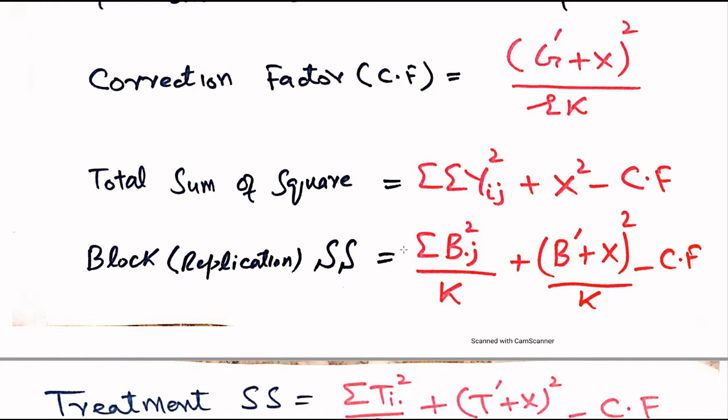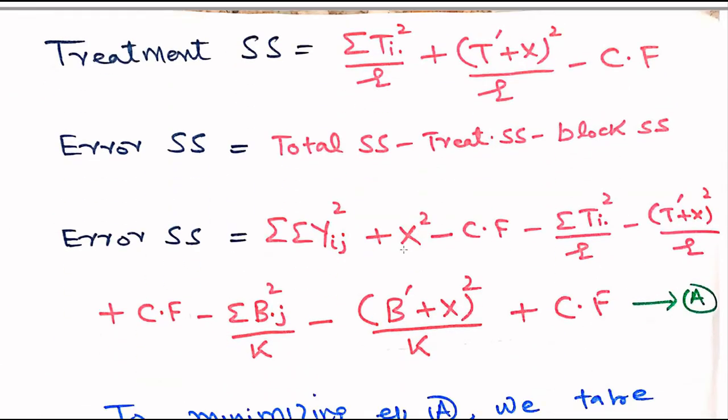For block or replication sum of squares, its abbreviation is SS. So it equals the sum of b dot j squared over k, plus b' plus x, whole squared over k, minus the correction factor. For treatment sum of squares, the sum of ti dot squared over r — since treatments are on one row, variation is i for row and dot for column — square over r, and because we have one observation missing, it is t prime plus x, whole squared over r, minus the correction factor.